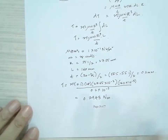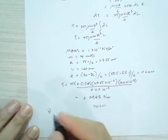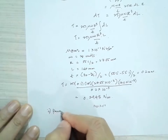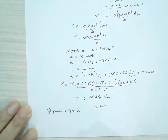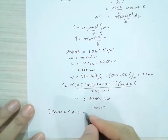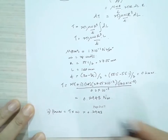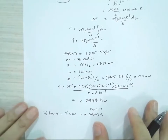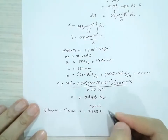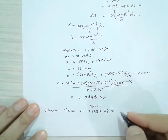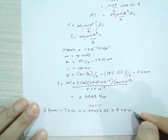For the next part, this is straightforward because power equals torque multiplied by omega. So power = 0.2943 N·m × 28 rad/s = 8.24 Watts.